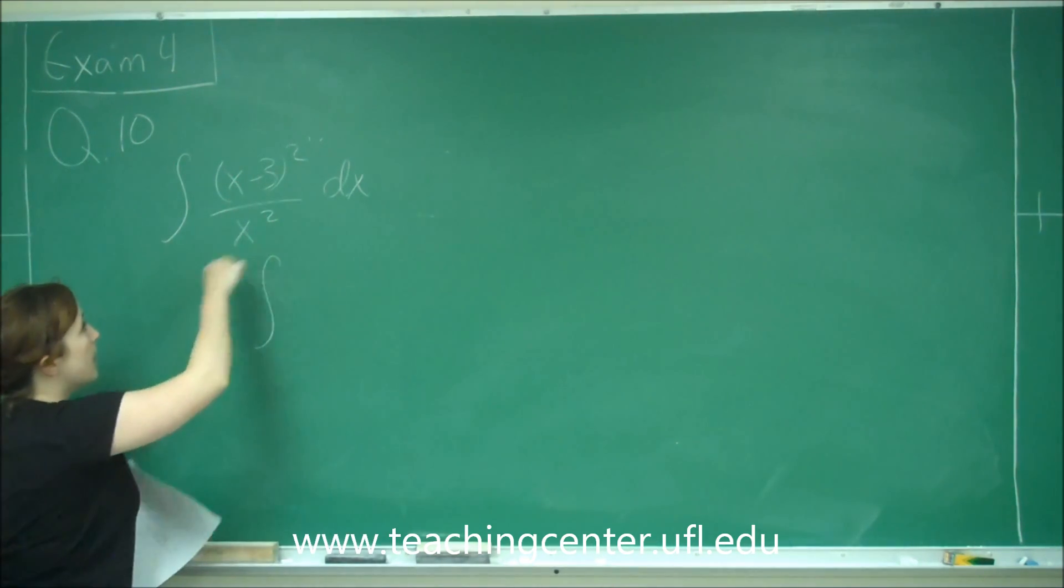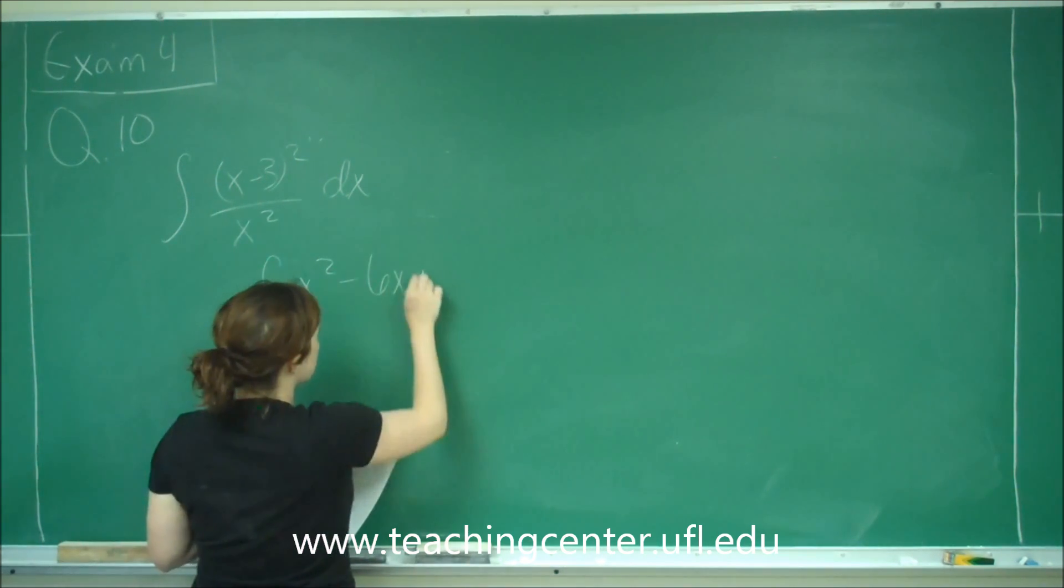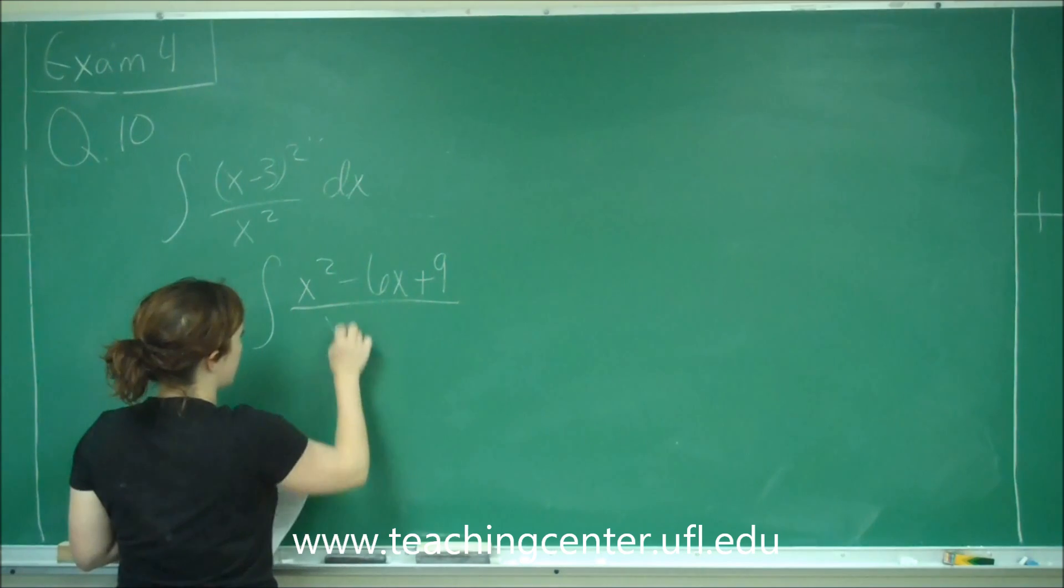When we expand (x - 3)², we get x² - 6x + 9 all over x².